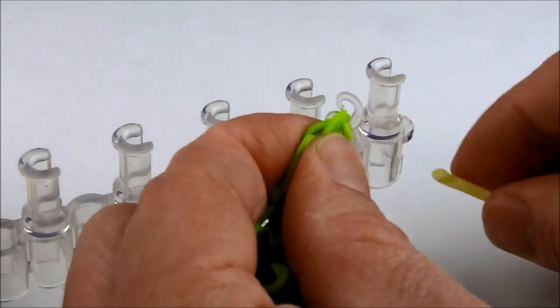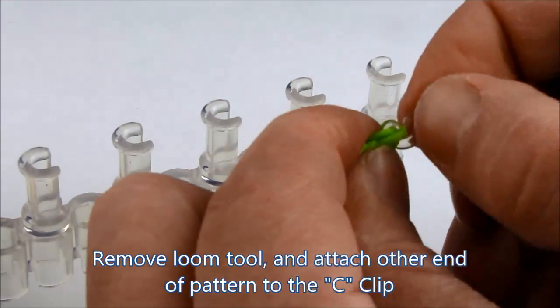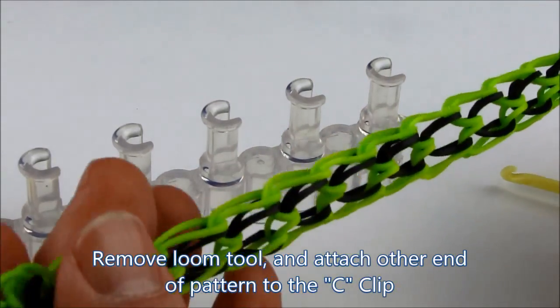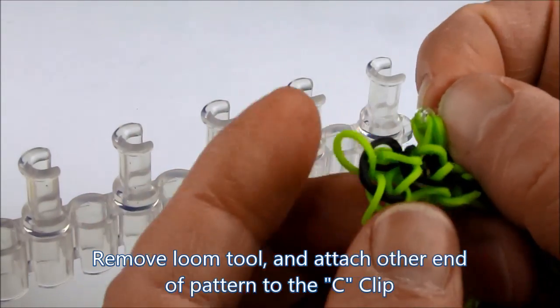We remove the loom tool from the pattern and attach the other end of the C-clip to the two loops that are on the other end of the pattern.